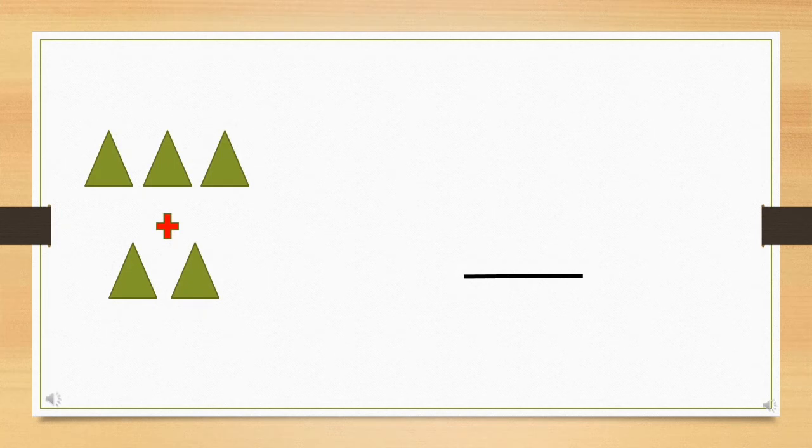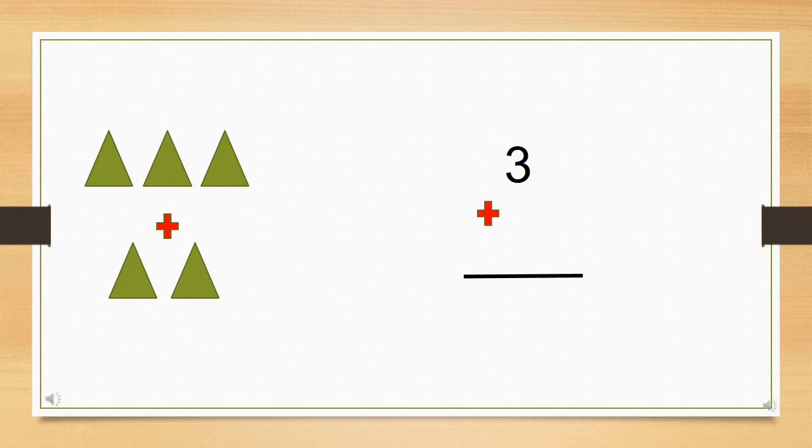Here we can see triangles. You can see three triangles on top, then there is addition sign, plus sign, and then at the bottom two triangles. This way if we count, it is called vertical addition. Now you already know pictorial addition and horizontal addition, so we are going to count with numbers. Here we have number three, then plus two.